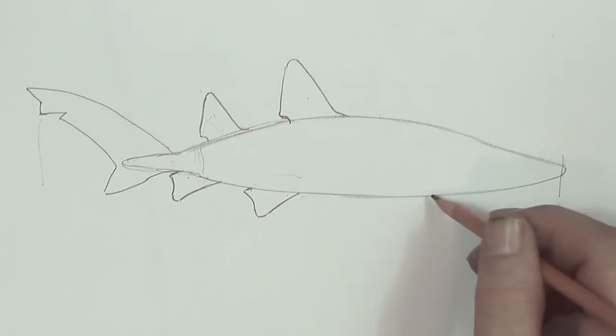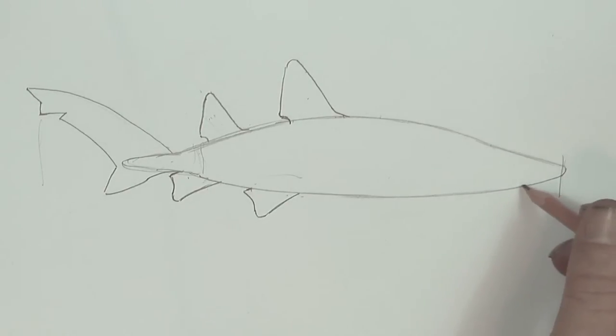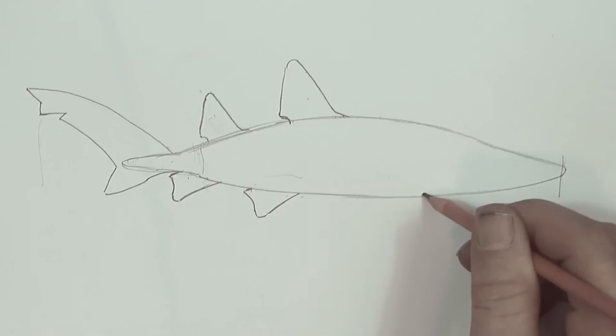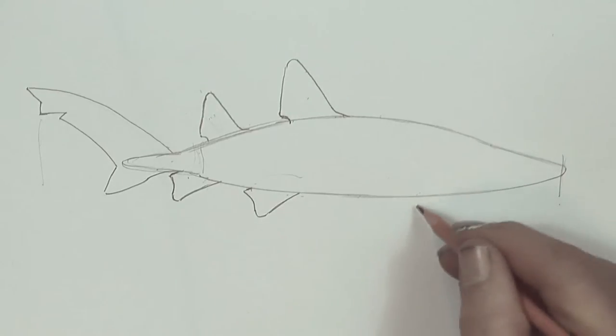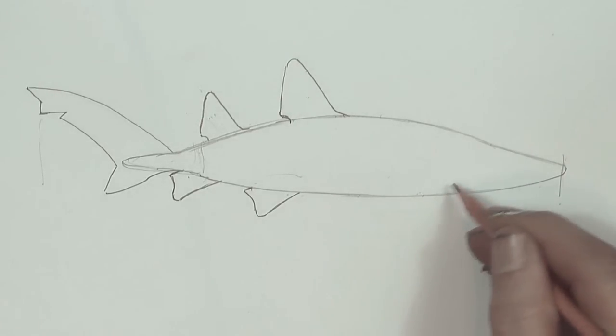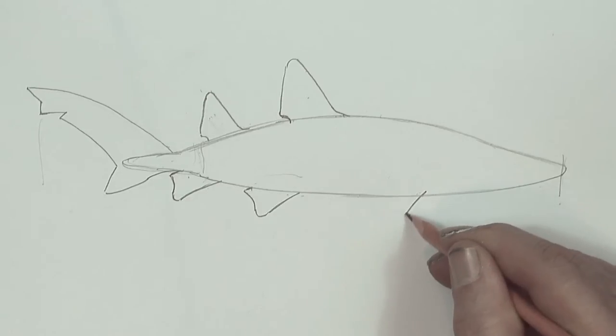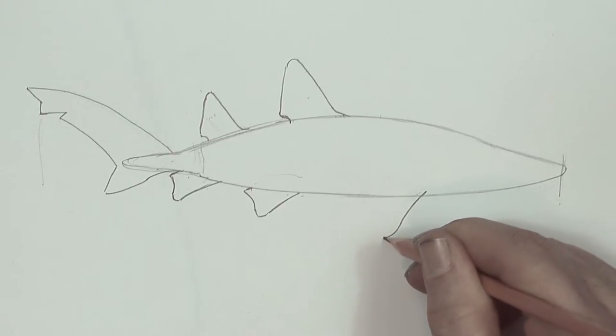Now, the pectoral fin, the one that juts out the front here, we're going to have to have room for gills and that, it's going to be about here. So, here we go, see it's a slight curve there.